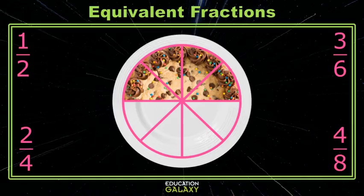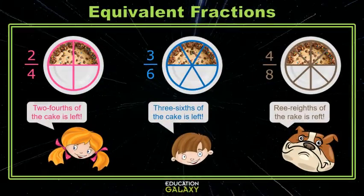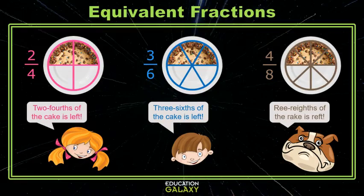So who was right, and who was wrong? It looks like Molly and her brother were right, even though they said different fractions. And surprisingly, the dog's math looked a little bit off. He thought it was three eighths, and it's really four eighths.